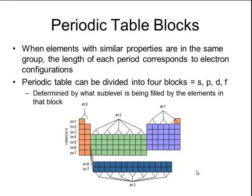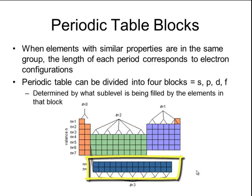All the elements in the d block can hold up to 10 electrons in their outermost orbital, whereas the f block ends with the sublevel f, which can hold 14 electrons.